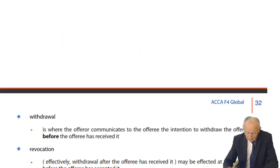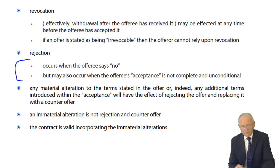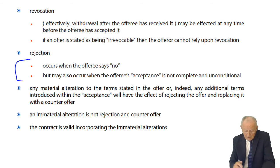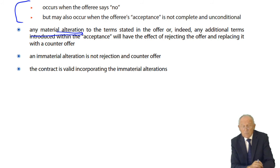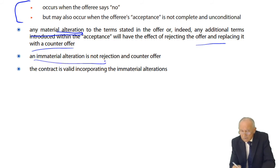Rejection can happen in two ways: simply saying no, or making a counter-offer. A counter-offer destroys the original offer and replaces it with a new version. Any material alteration — to quantity, description, date of delivery, or value — constitutes a counter-offer, not acceptance. However, an immaterial alteration is acceptable, and a contract will be valid incorporating immaterial alterations.